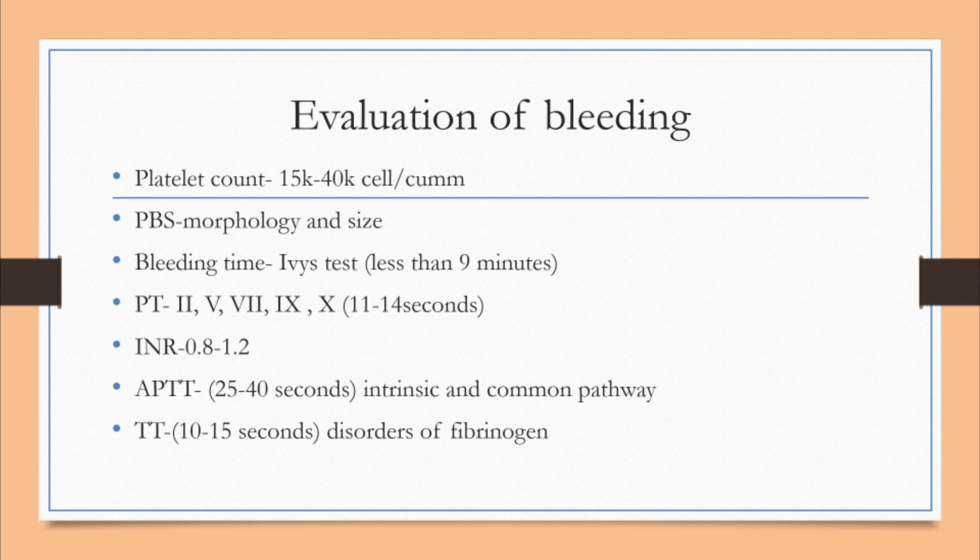We will do the bleeding time, which is normally less than 9 minutes. Then we check coagulation parameters — the prothrombin time (PT). PT checks the extrinsic pathway and the common pathway. Normal PT is 11 to 14 seconds, and it will be increased in case of deficiency of factors 2, 5, 7, 9, and 10. We also check the INR.